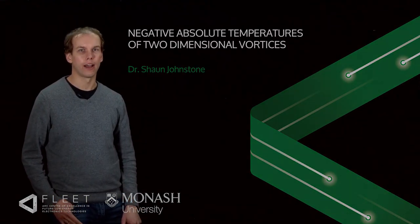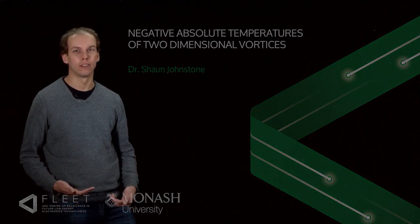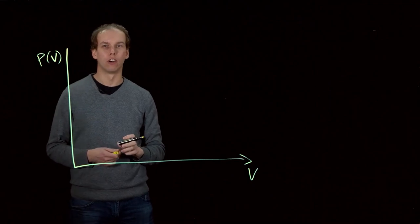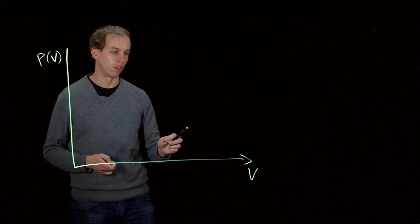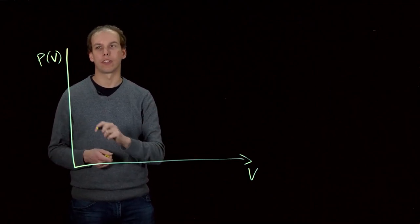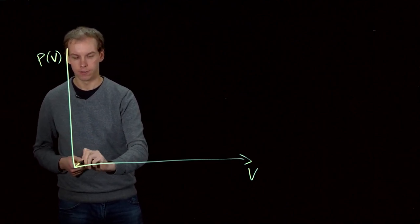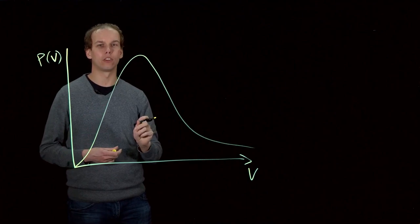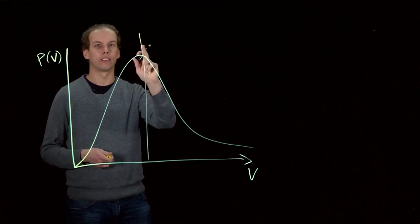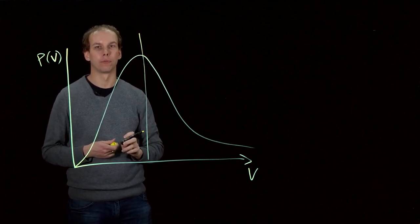A system of particles has a temperature which corresponds to the average velocity of the particles in it. If we draw a graph of the velocity of individual particles and how probable it is to have a particle of that velocity, it'll typically look something like this and the peak of this distribution corresponds to the temperature.